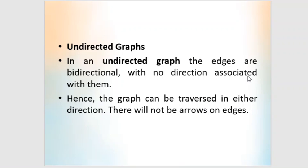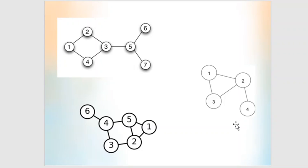Next is the undirected graph. In an undirected graph, the edges are bidirectional — there will not be any direction associated with the edges. Undirected graphs can be traversed in either direction, and there will not be arrows on the edges. These graphs are called undirected graphs.